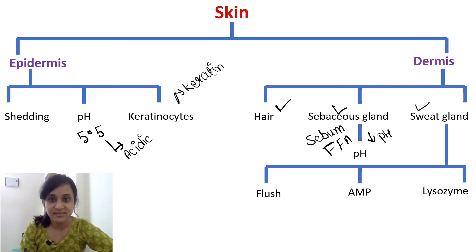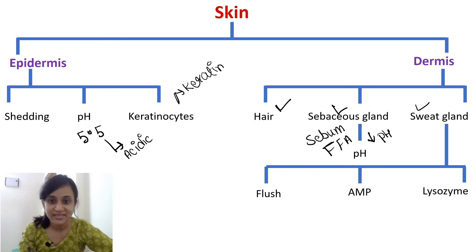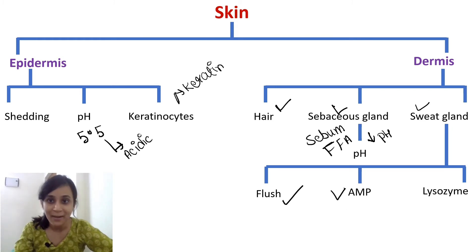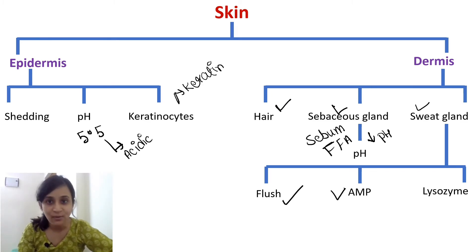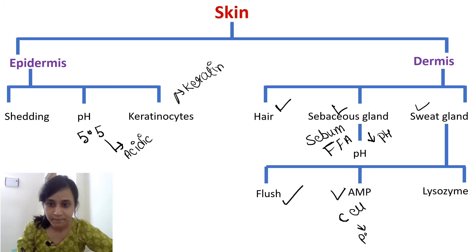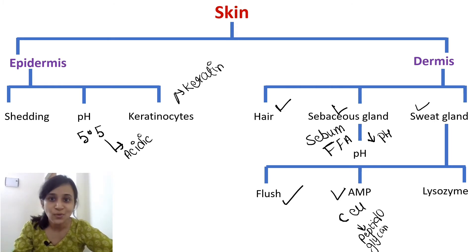Sweat glands produce sweat, which has the capacity to flush pathogens. Sweat also contains some antimicrobial proteins (AMP) that may kill pathogens. Sweat also contains lysozyme, which is antibacterial. Lysozyme attacks the peptidoglycan molecule of the bacterial cell wall, cleaving it and thereby killing bacteria.